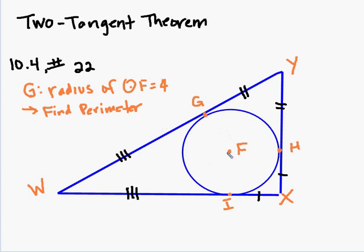If the radius of circle F is 4, I know, and also let's just draw this in here, because this is a right angle. I know that FI is 4 and FH is 4, and these form right angles with their tangents.